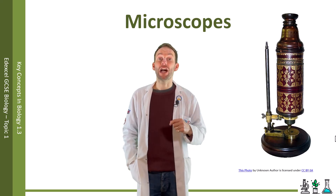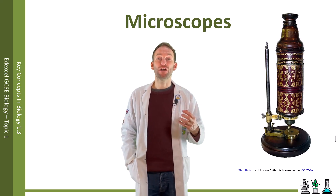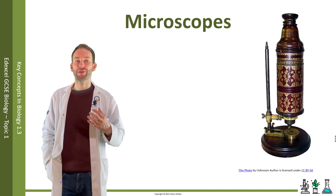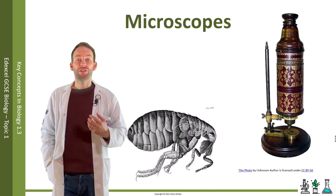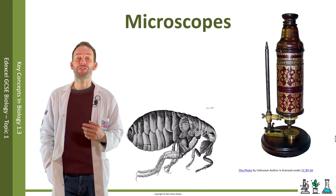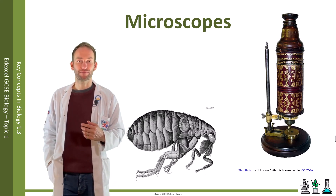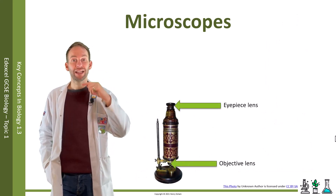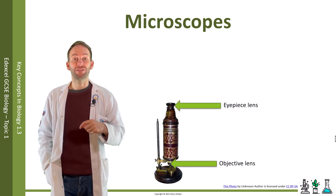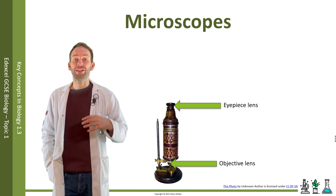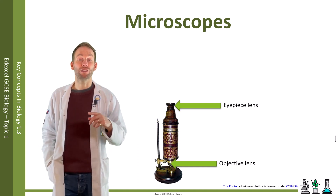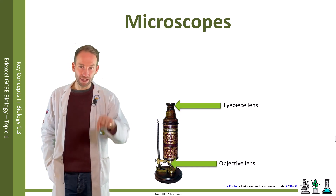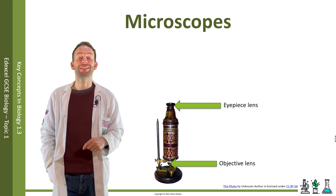In 1665, a man called Robert Hooke built the first microscope. He looked at many things down his microscope and drew them in great detail — for example, look at this fantastic flea. Hooke's microscope used a lens at the top called the eyepiece lens, and a lens at the bottom called the objective lens, and that made things appear 30 times larger — x30 magnification — by magnifying the light passing through those two lenses.